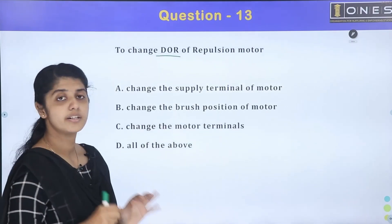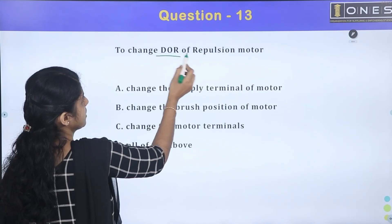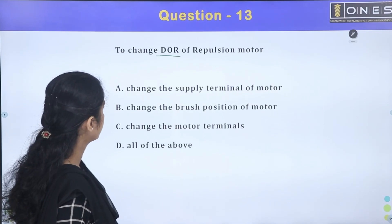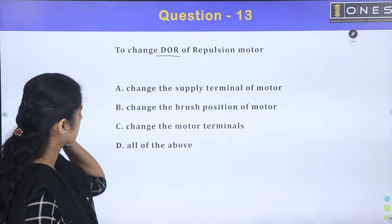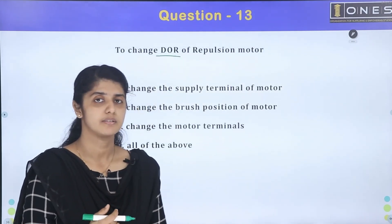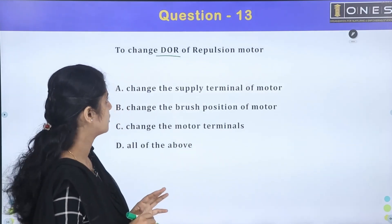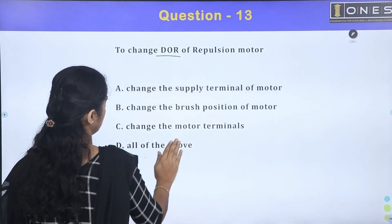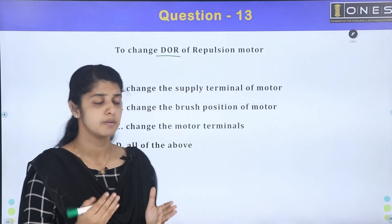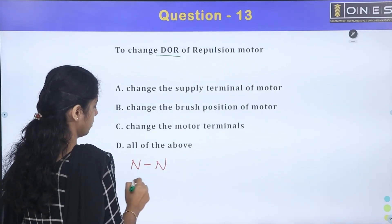Next question: To change the direction of rotation of a repulsion motor, the options are — change supply terminals, change brush position, or change motor terminals.